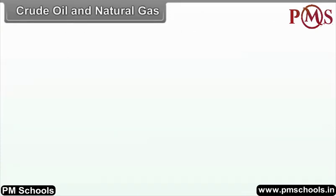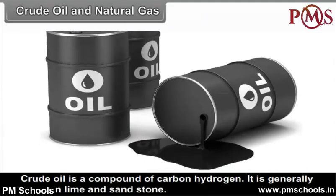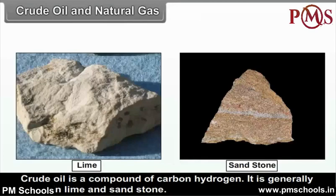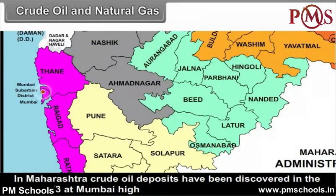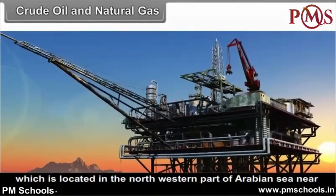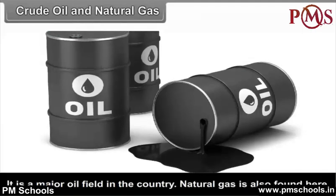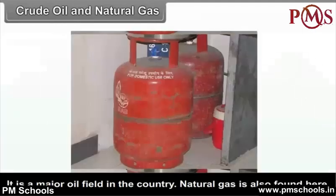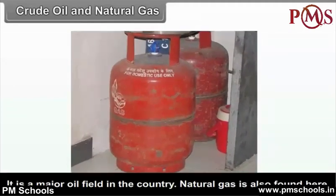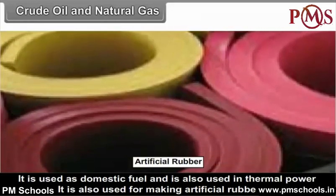Crude Oil and Natural Gas. Crude oil is a compound of carbon and hydrogen and is generally found in lime and sandstone. In Maharashtra, crude oil deposits were discovered in 1973 at Mumbai High, located in the north-western part of the Arabian Sea near Mumbai. It is a major oil field in the country. Natural gas is also found here; it is used as domestic fuel, in thermal power stations, and also for making artificial rubber.